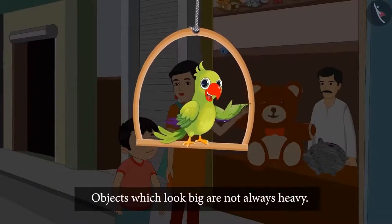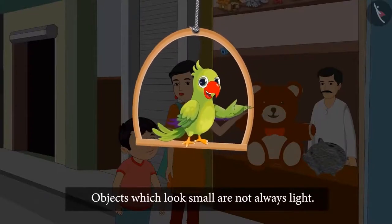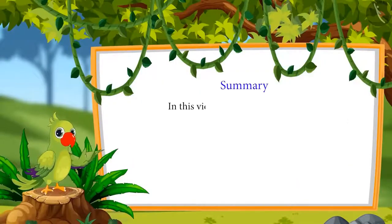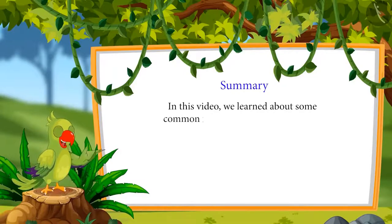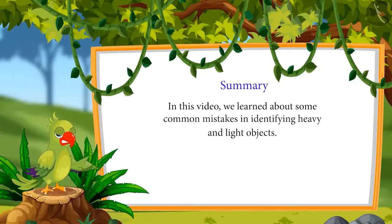So, children, objects that look big in size need not always be heavy. We will give this teddy bear to Pinky. She will be really happy. So, children, this means that objects which look big are not always heavy and objects which look small are not always light. That was all for today. In this video, we learned about some common mistakes in identifying heavy and light objects. I hope you have understood this topic properly. Bye, children.